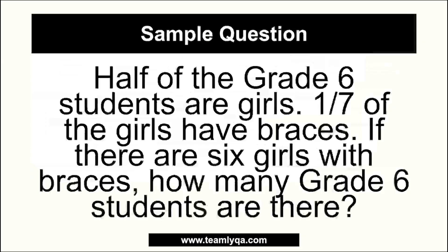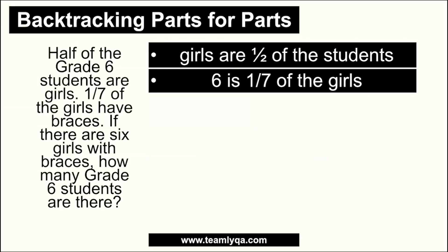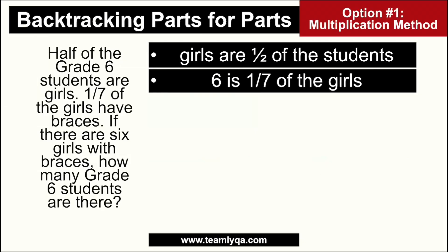If you haven't seen the backtracking lesson, it's also linked above. Now, the concept is this: there are two parts to the question. Number one, the girls are one-half of the students — that's our first clue, so half of the entire student population. The second thing is that the number six, which is the number of girls with braces, is one-seventh of the total girls. So again, two parts to our problem. Now, if I'm going to use the multiplication method — our formula method for this problem — the equation would be this.